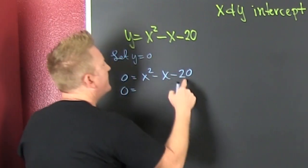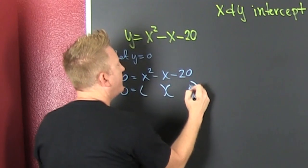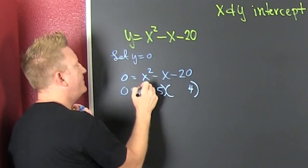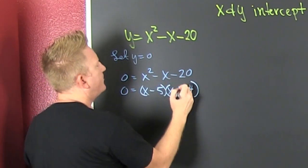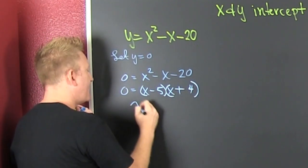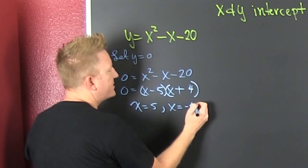We're looking for the factors of 20 that subtract to be 1. Are there any? Looks like a 4 and a 5. Sure. They multiply to be 20 and subtract to be 1. There's an x and there's an x. The signs are different. The big one's negative and positive. That gives you... It says x is equal to 5 or x is equal to minus 4.